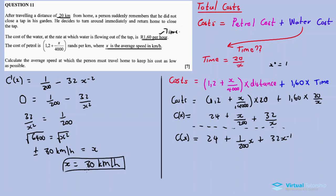So the person must travel at 80 km/h or faster to minimize the combined cost of petrol and the water running while absent from home. That's question 11. I hope this was fruitful — if you got value from this video, please like, comment, subscribe, and I'll see you in the next video. Bye bye.